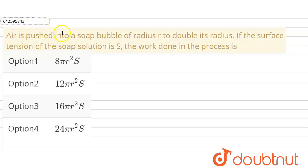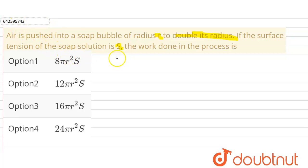Hello everyone. Our question is: air is pushed into a soap bubble of radius r to double its radius. If the surface tension in the soap solution is s, the work done in the process is — we have to calculate the work done when air is pushed into a soap bubble of radius r to make the radius 2r.